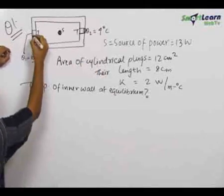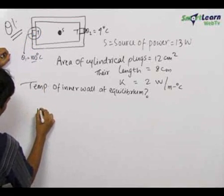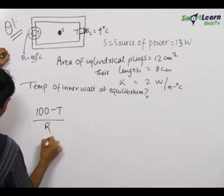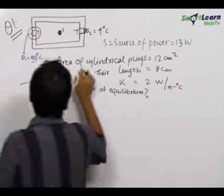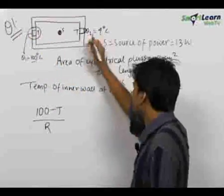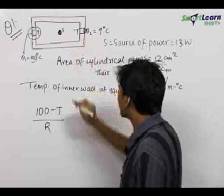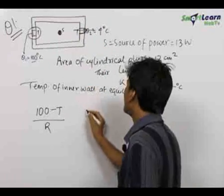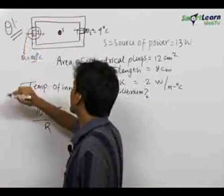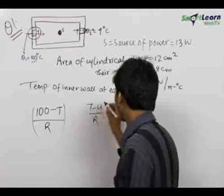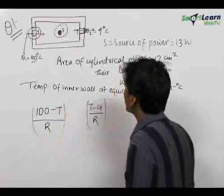Applying that, let us first find the heat current at this junction. The heat current at this junction can be written as (100 − T) / R, where R is the thermal resistance of this cylindrical rod. Since both cylindrical plugs are similar, the resistance of the other one will also be R. But here T will be greater than 4, so the heat current going outside will be equal to (T − 4) / R. The heat current coming in was (100 − T) / R, and there is an additional source of power of 13 watts inside the chamber.